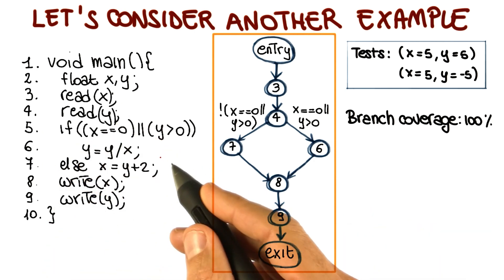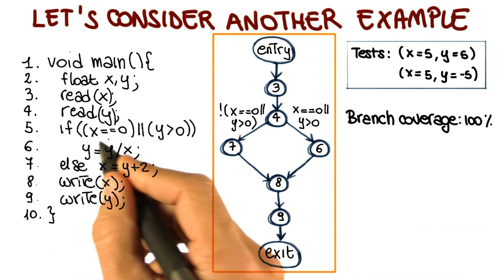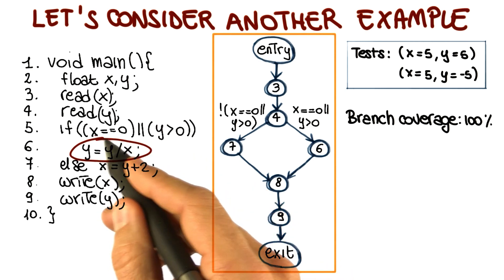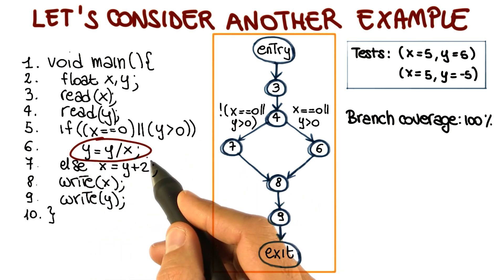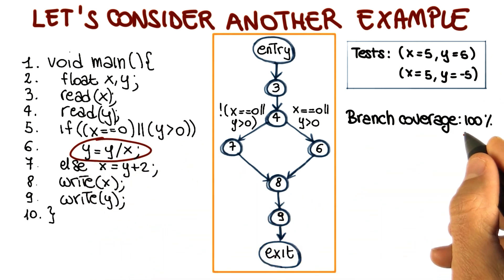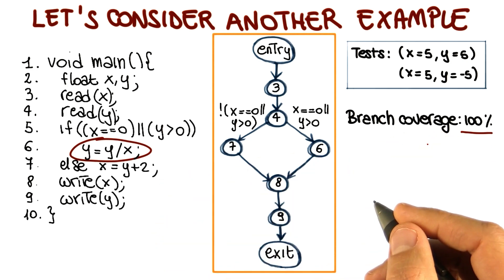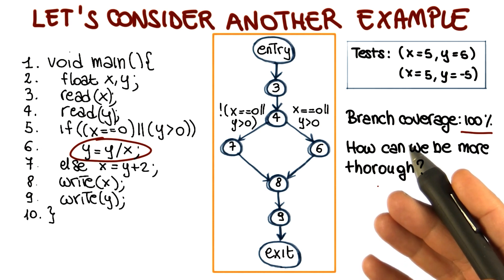If we look at the code, though, we can see that there is the possibility of making this code fail. Consider this statement. If x is equal to 0, we could have division by 0. However, these two test cases, despite the fact that they achieve 100% branch coverage, will not reveal this problem. So how can we be more thorough?